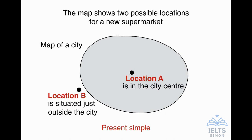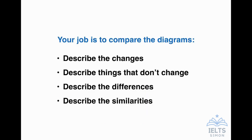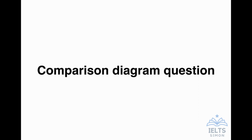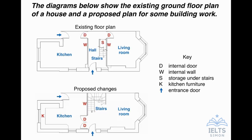If any of that seems confusing, just remember your job is to compare the diagrams — describing changes or things that don't change, differences, similarities — whether it's a map, alternative designs, or before and after, it doesn't matter. Now let's look at today's comparison diagram question. Read the statement at the top: 'The diagrams below show the existing ground floor plan of a house and a proposed plan for some building work.' The top diagram says 'existing floor plan' and the bottom says 'proposed changes.' This is a now and future question, so we'll use the present tense and the future tense with 'will,' because the proposed diagram is for the future — it hasn't been done yet.